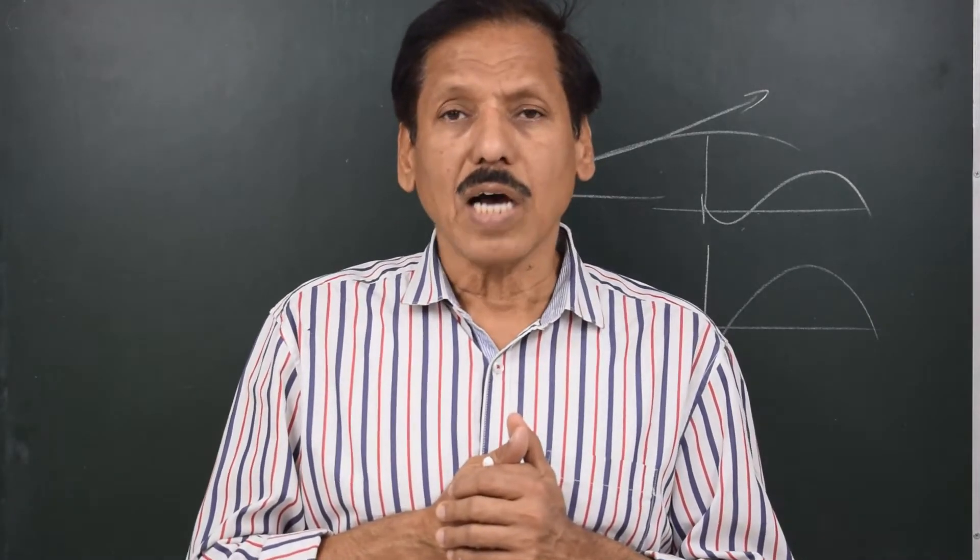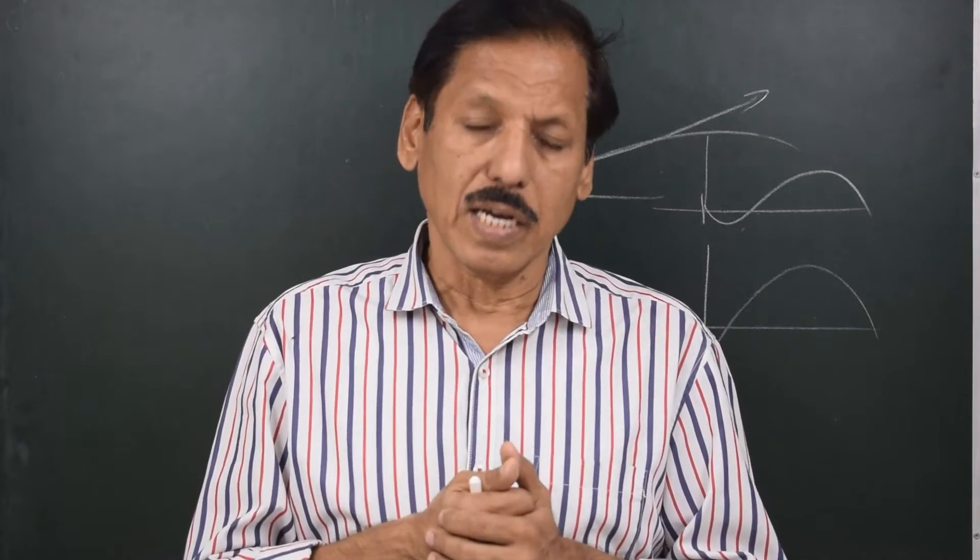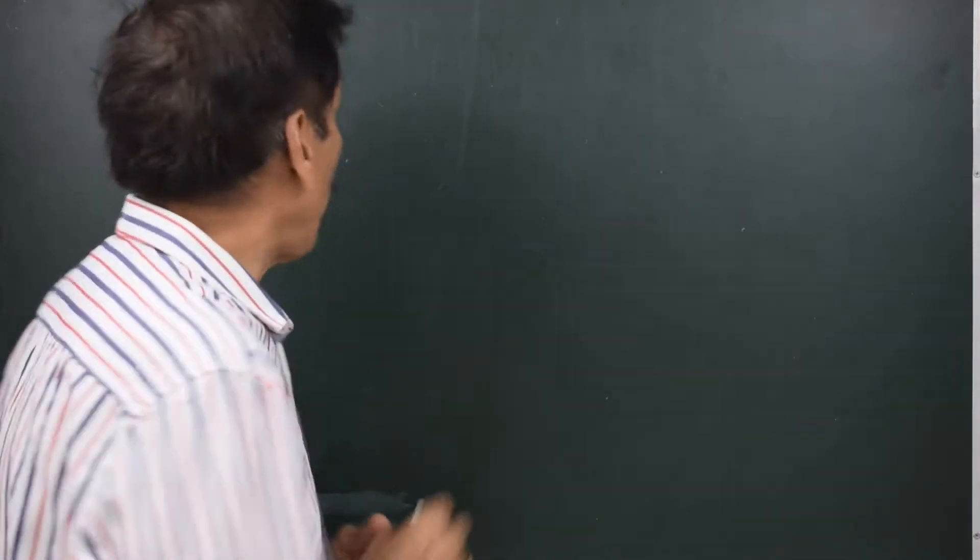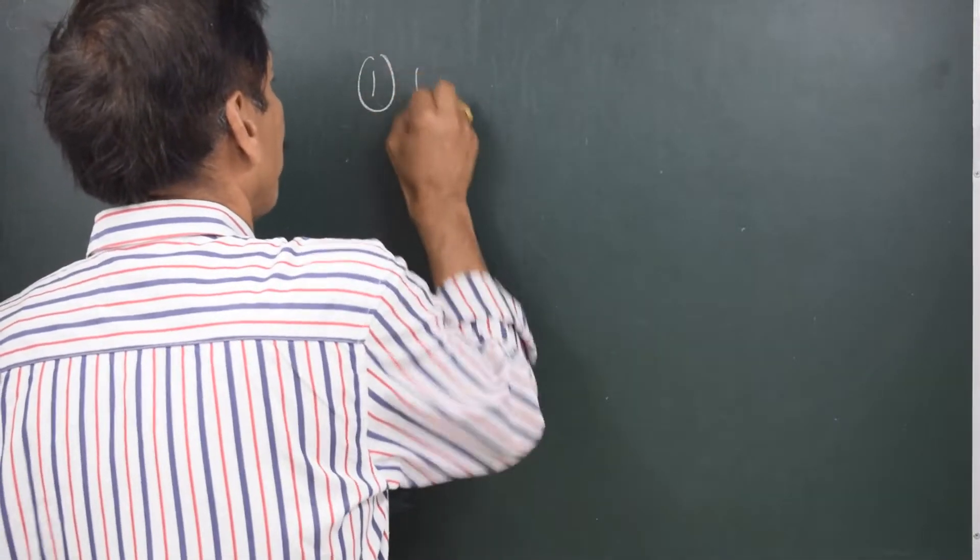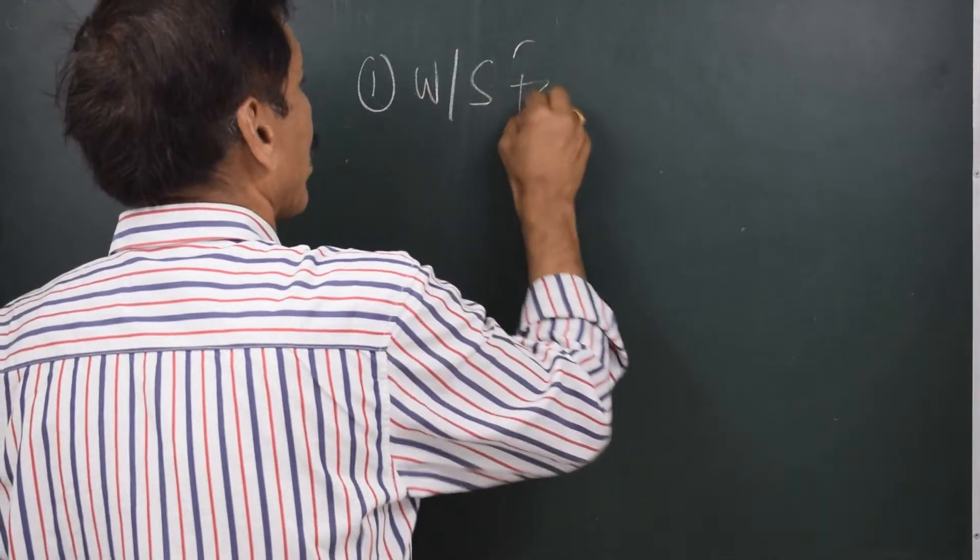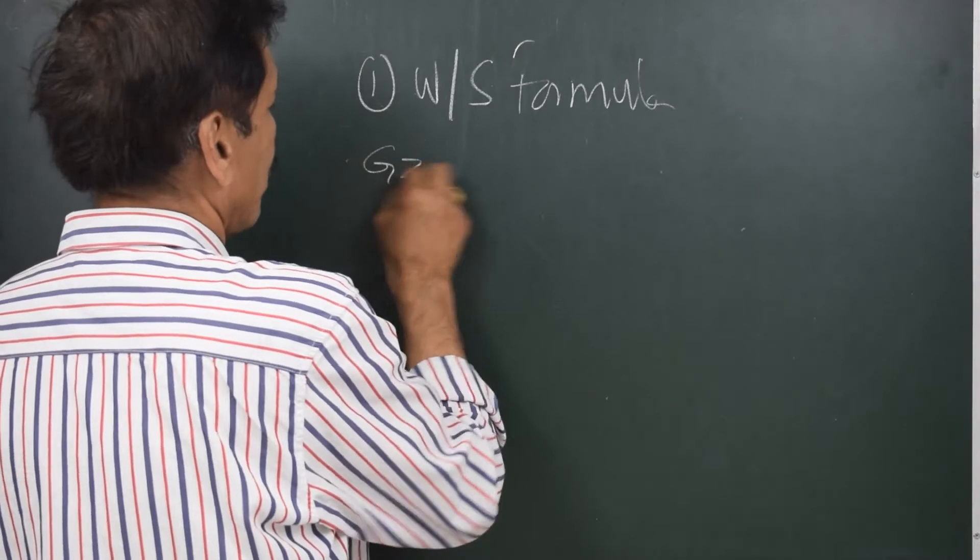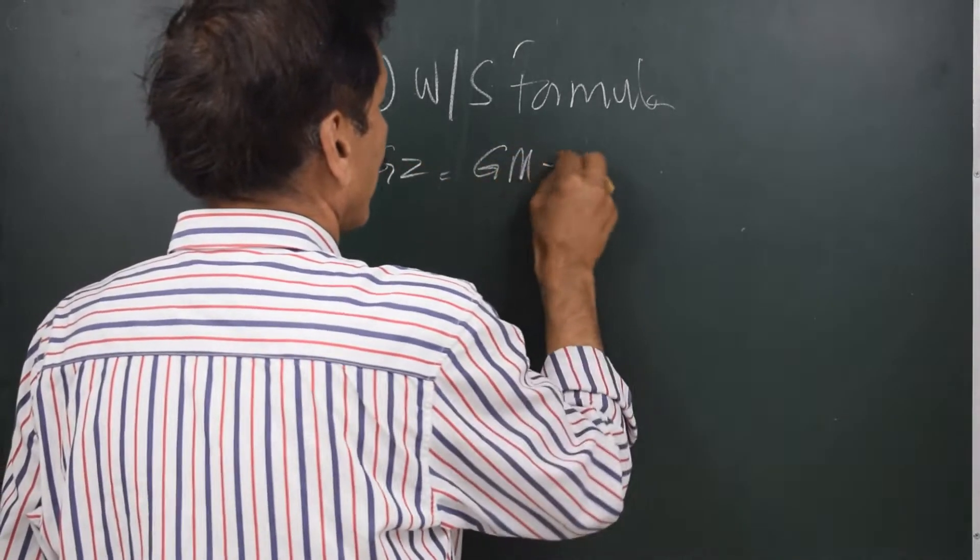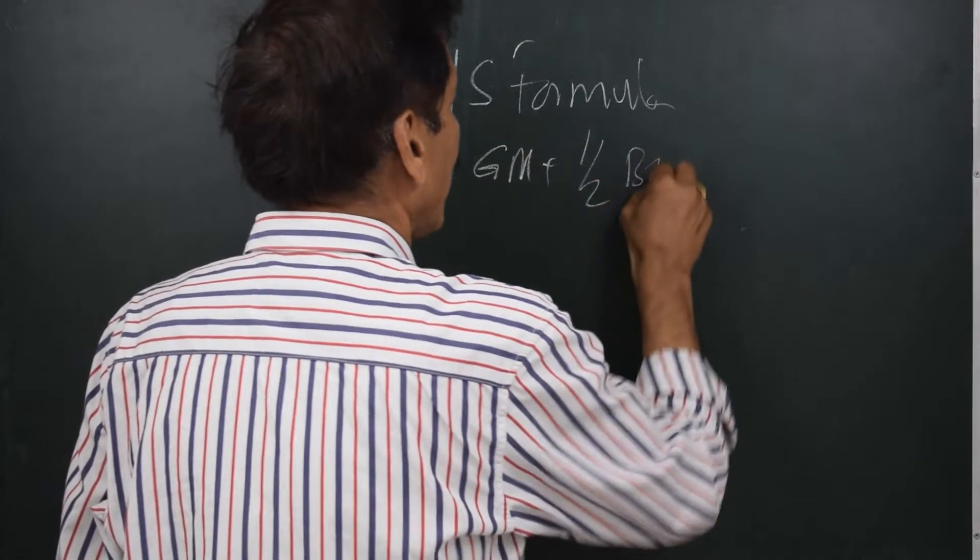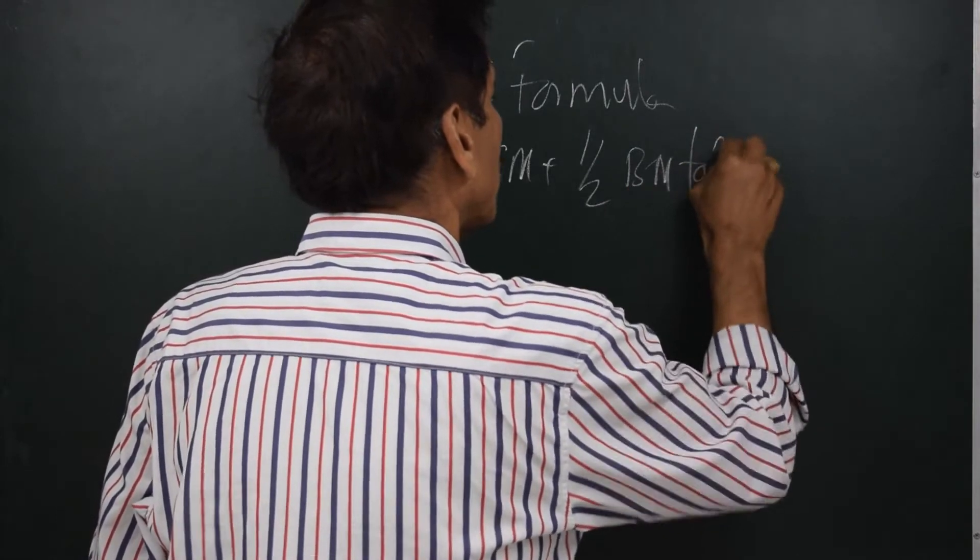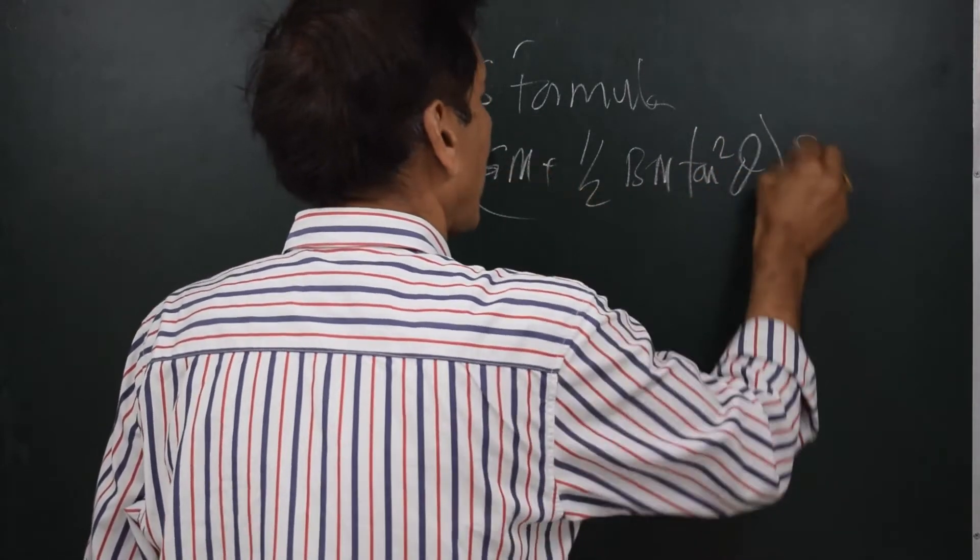Now next is how do we get stability at large angles of heel. Well number one is wall-sided formula and that is GZ equals GM plus half BM tan squared theta, the whole thing multiplied by sin theta.